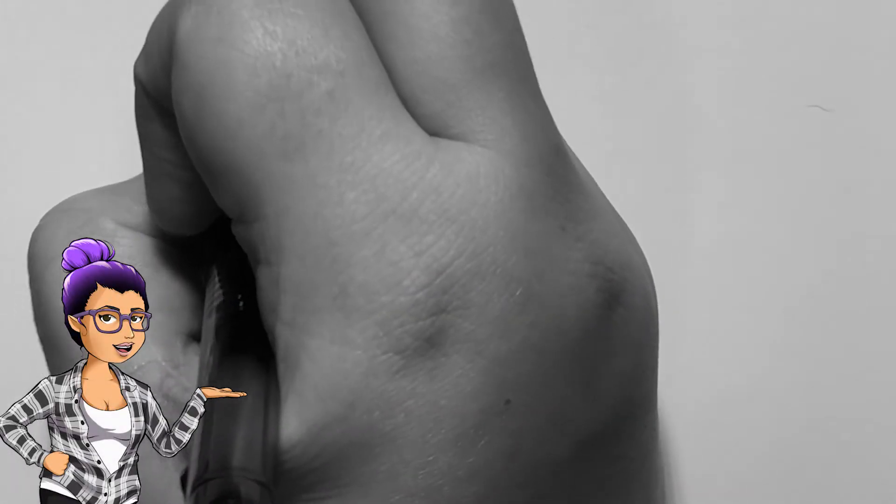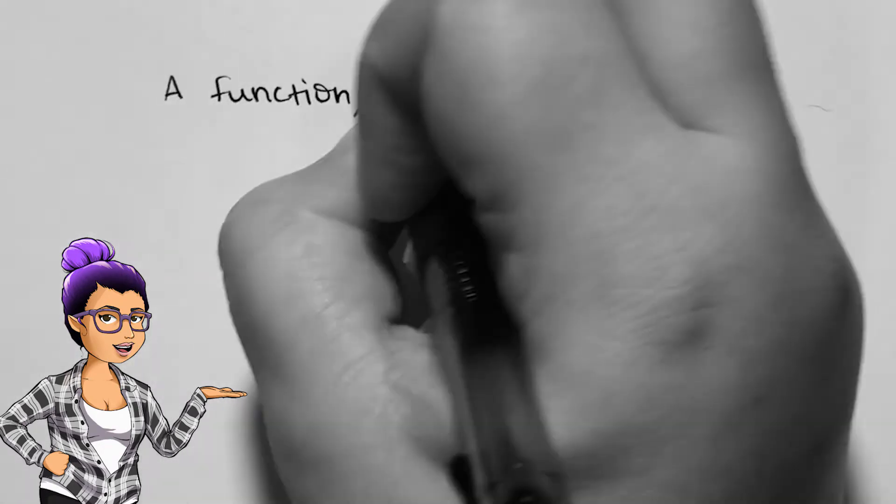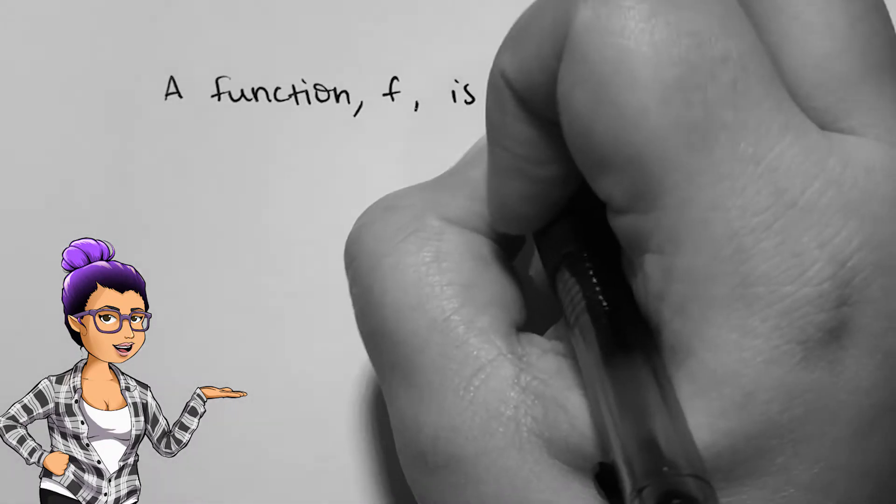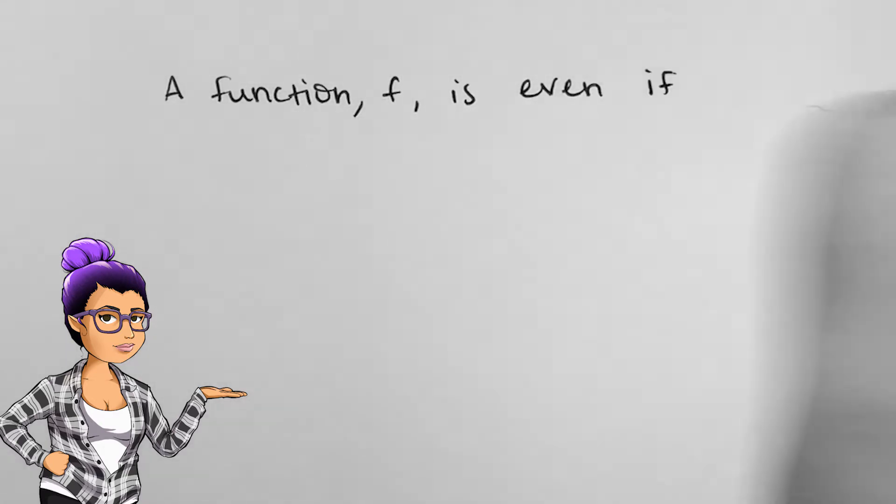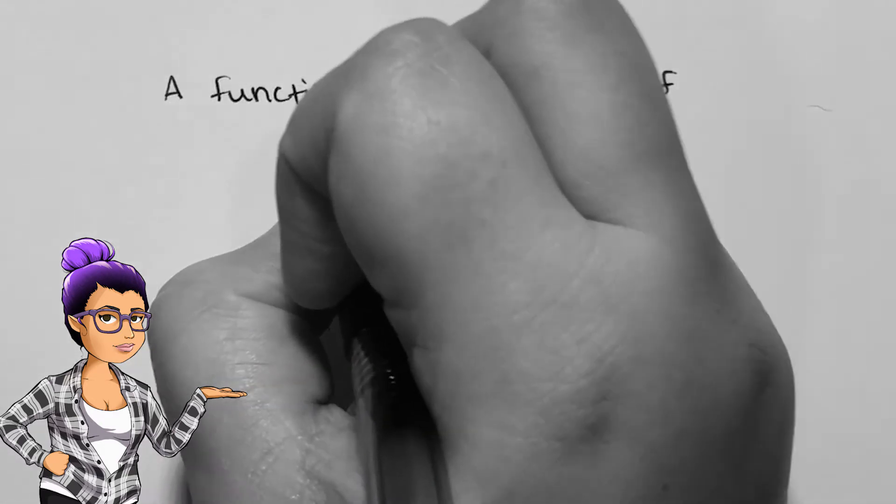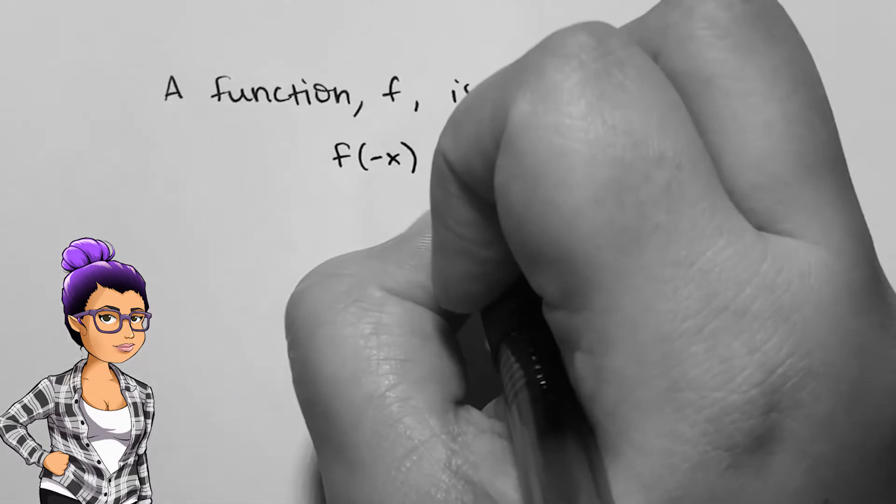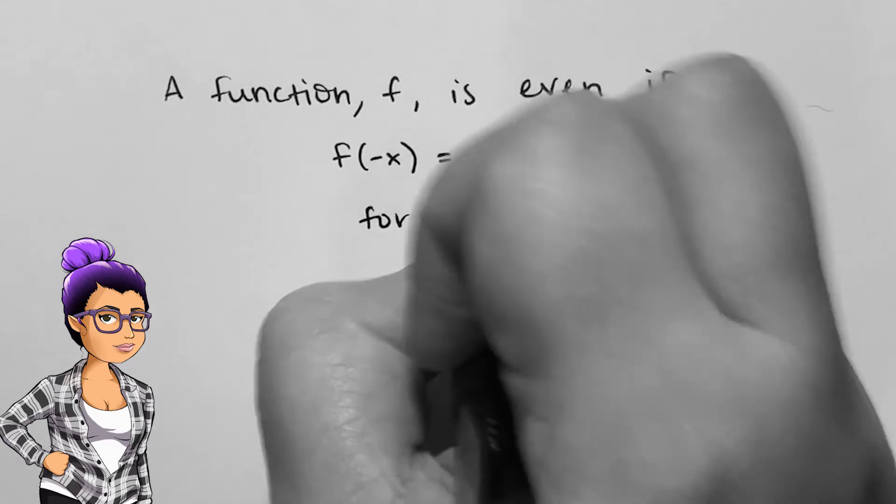A function f will be even if every x has that f of negative x is the same as f of x. Basically, we can plug in negative x and the end result does not change. An example of this is the squared function.